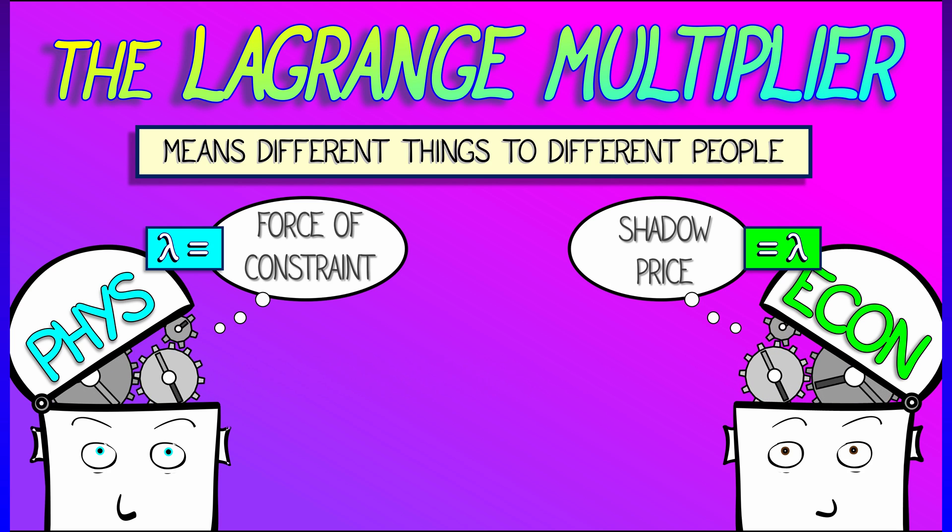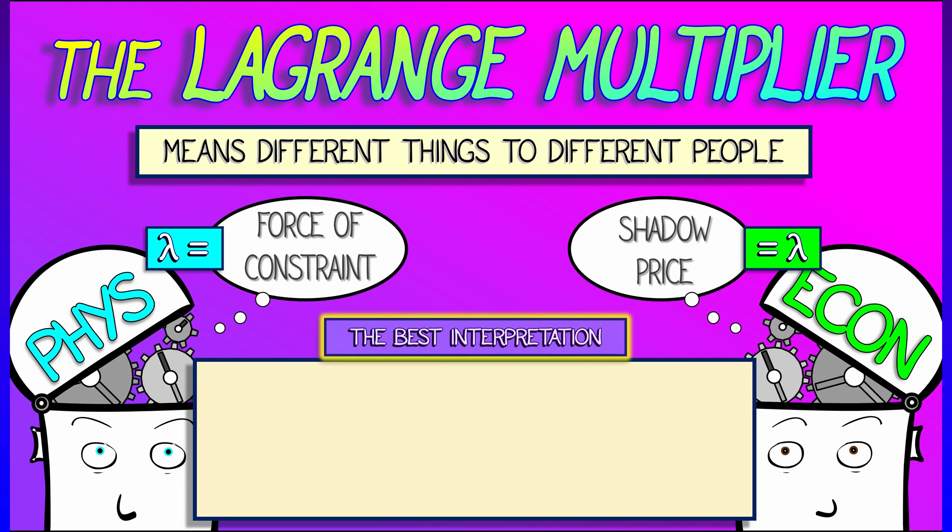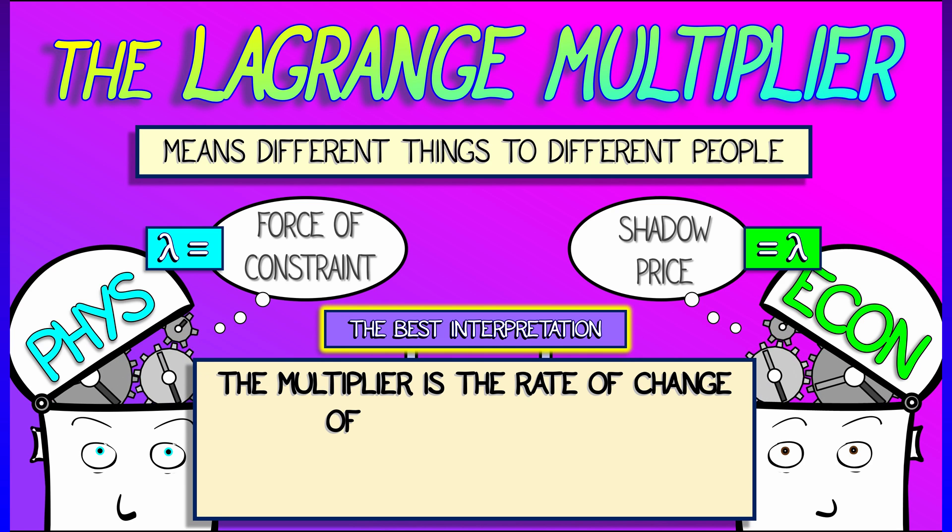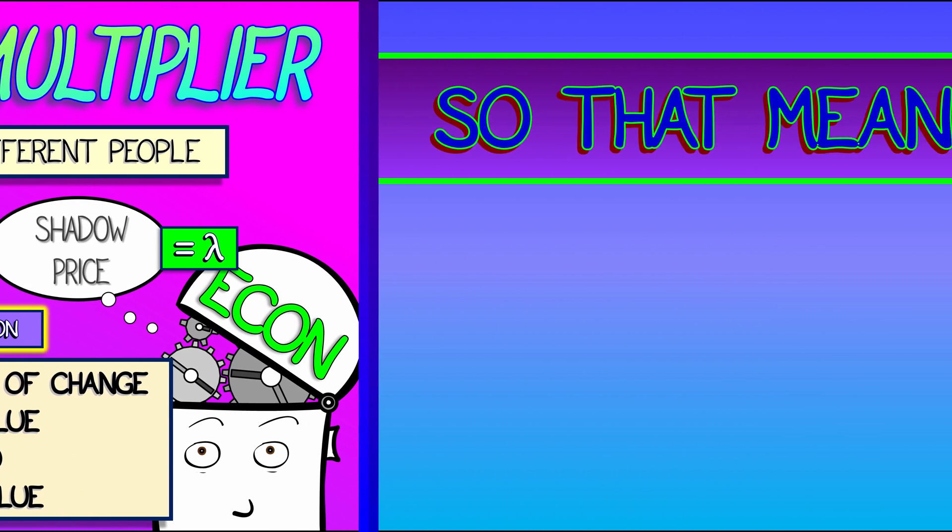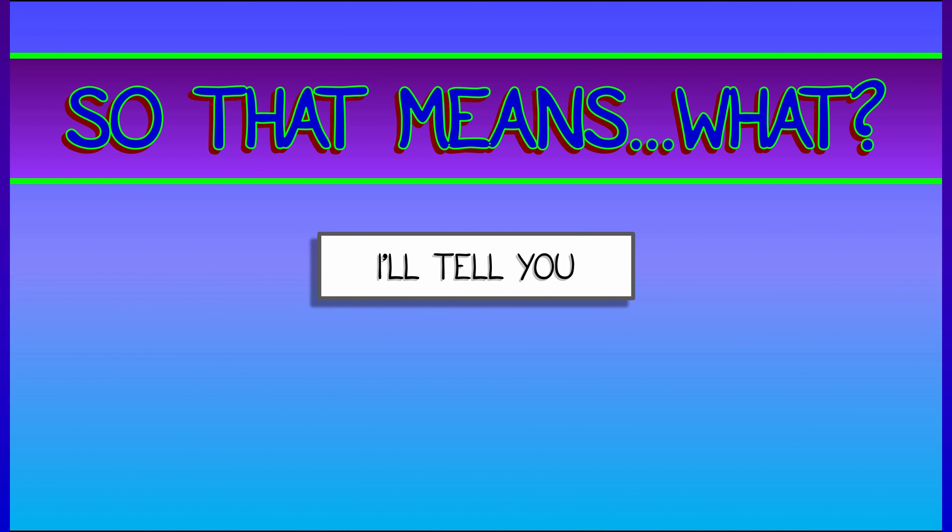But as a mathematician, I think the best interpretation of the Lagrange multiplier is it's the rate of change of the optimal value with respect to the constraint value. So that's it. Now you're done. All set. Well, what does that really mean?